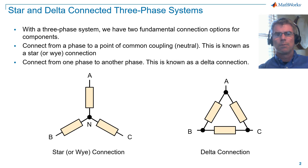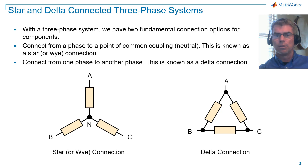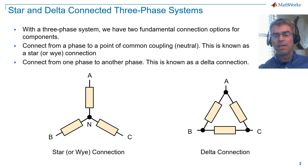With a three-phase system we have two fundamental connection options for components. We can connect from a phase to a point of common coupling or neutral point — this is known as a star or Y connection. And we can also connect from one phase to another phase — this is known as a delta connection.